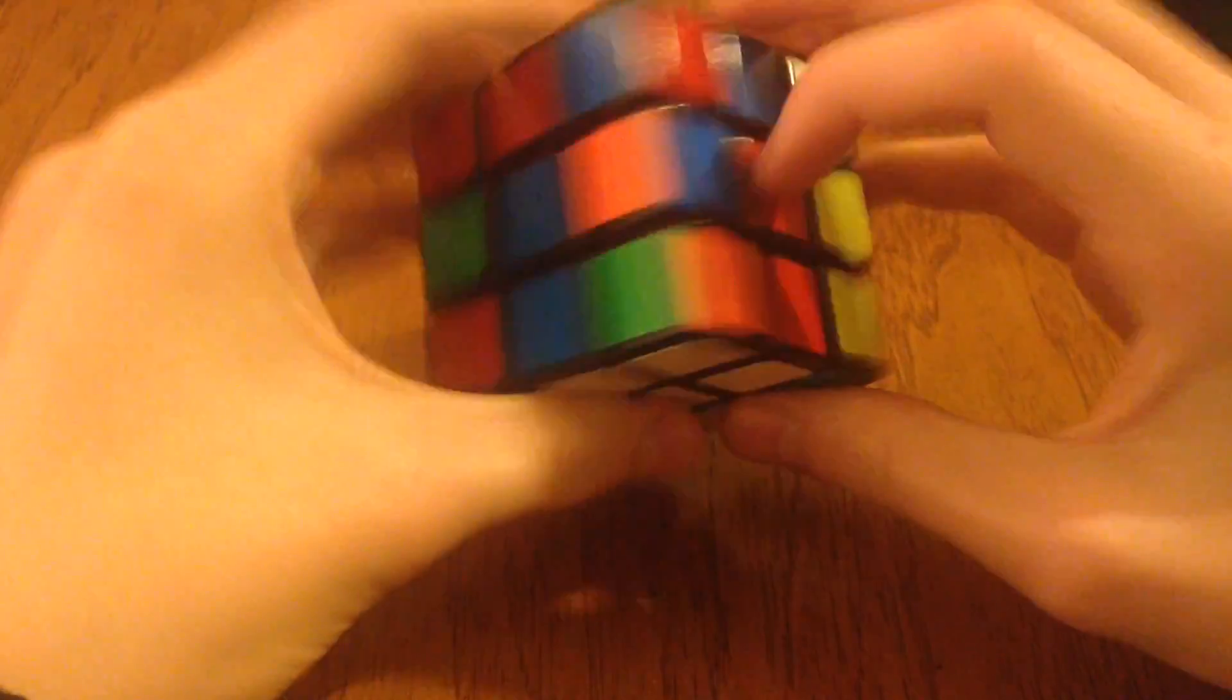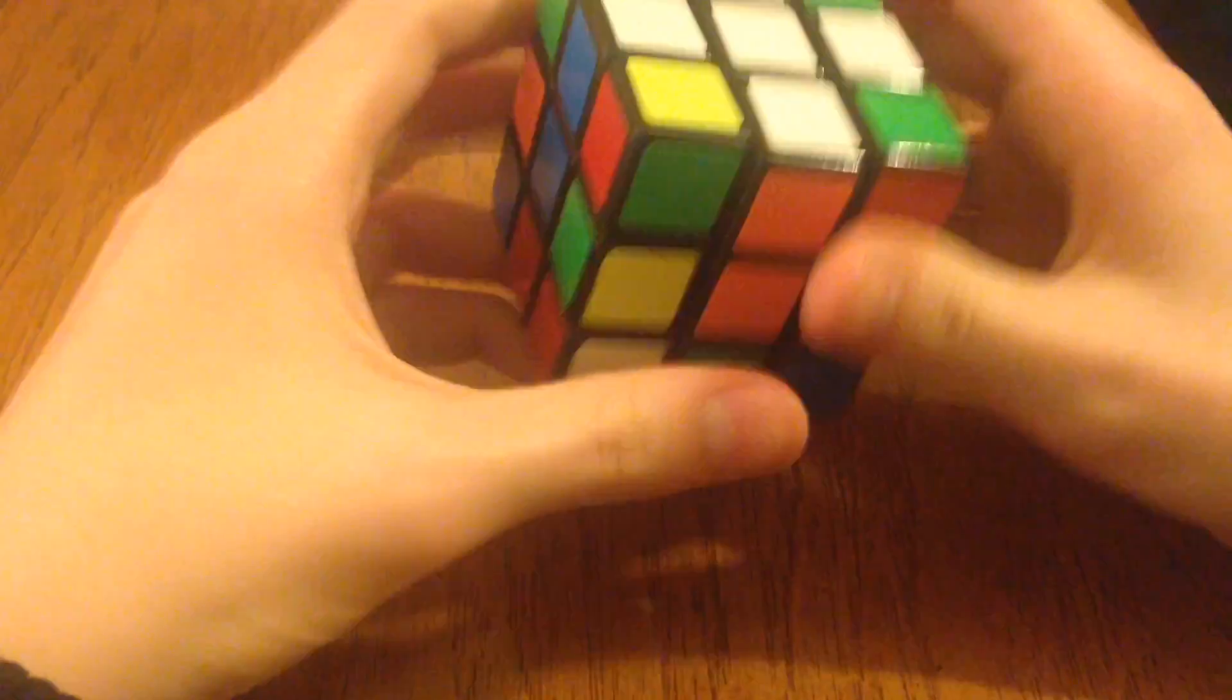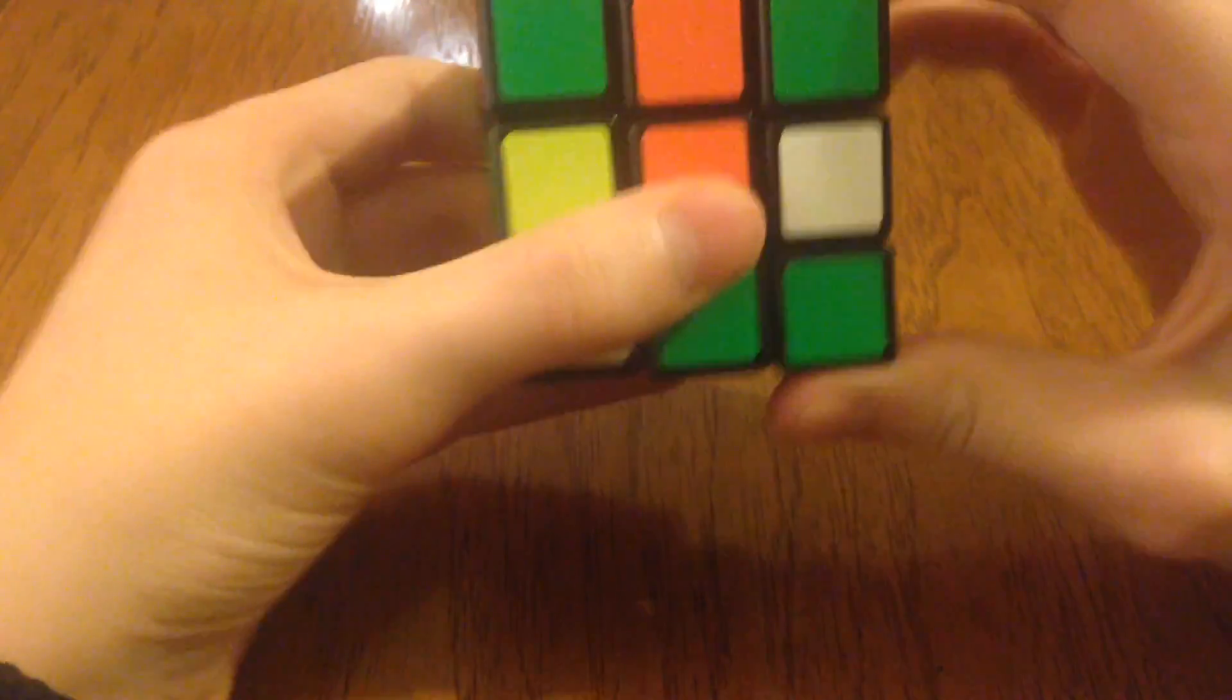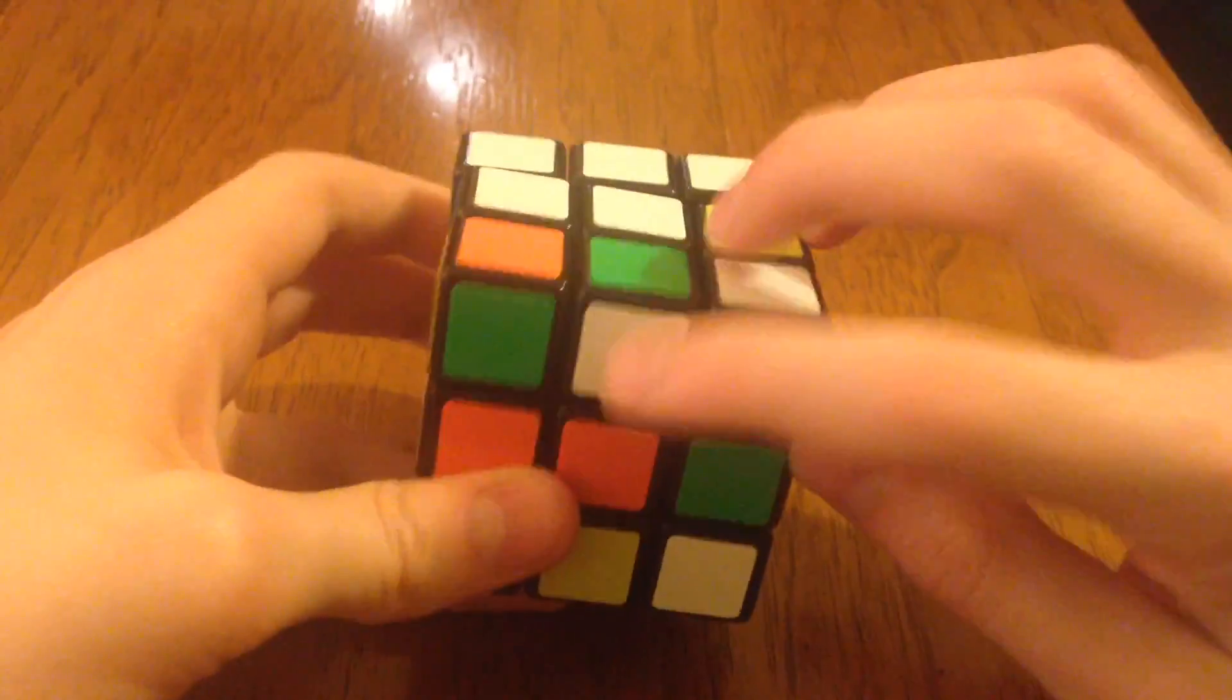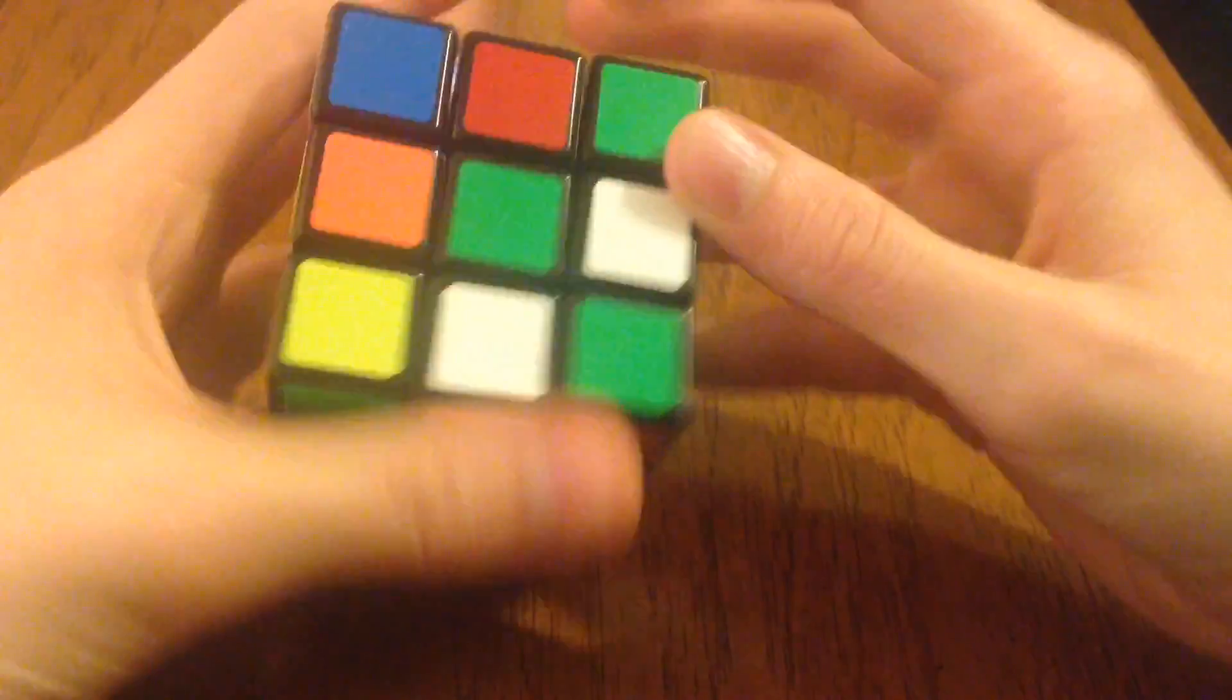And now we have the white cross, where each piece corresponds. So I'm going to show you again, though, what you do when it's flipped. So say we have this white and green right here. And so we move it into the correct spot, right? But it's flipped. It's upside down.